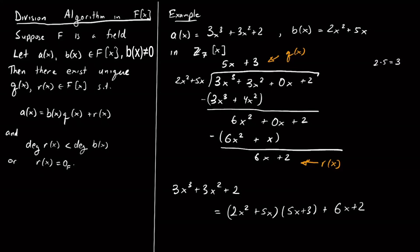We can check this works out. For example, 2x² × 5x = 10x³ = 3x³. For x² terms: 2x² × 3 = 6x², and 5x × 5x = 25x² = 4x², giving 6 + 4 = 10 = 3 in Z mod 7, so 3x². For x terms: 5x × 3 = 15x = x, and x + 6x = 7x = 0 in Z mod 7. The constant term is 2 from the remainder. Everything checks out.